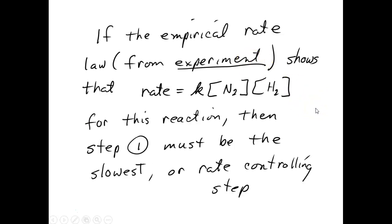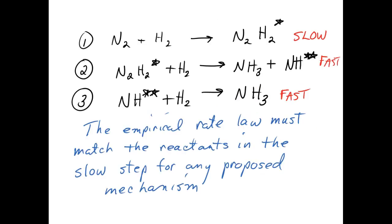If the empirical rate law from experiment shows that the rate depends on N2 and H2 each to the first power, then that means step one must be the slowest step, or the rate-controlling step. This must be the slowest step, since the rate law depends on 1 H2 and 1 N2. The empirical rate law has to match the reactants in the slowest step for a proposed mechanism.